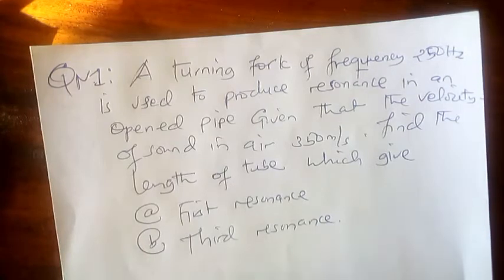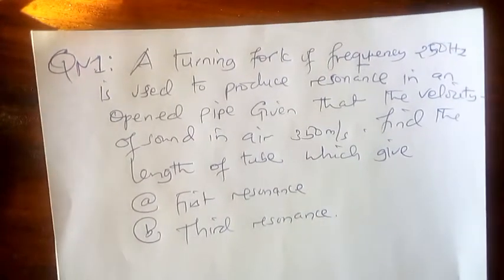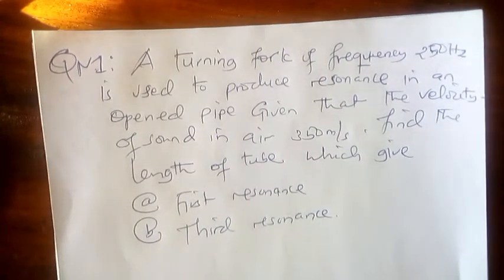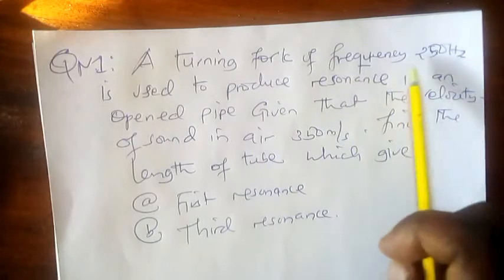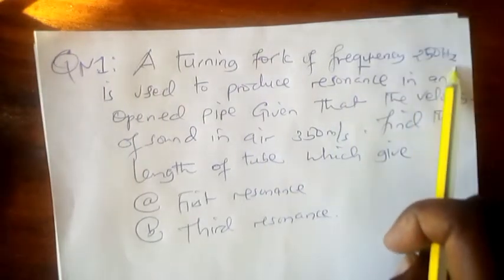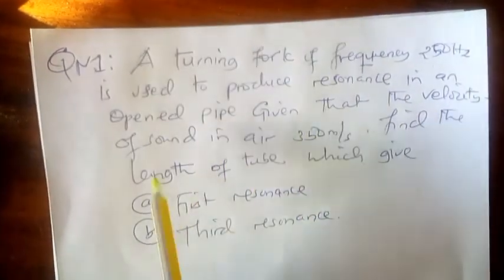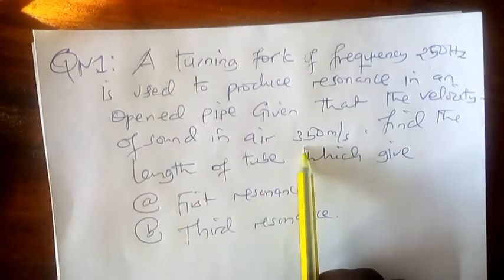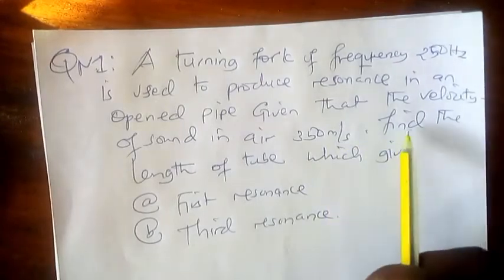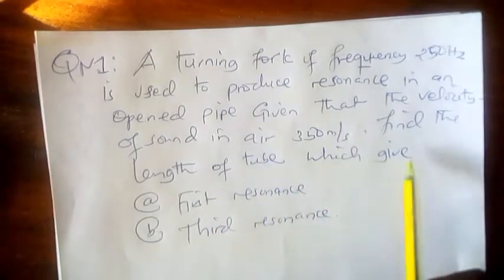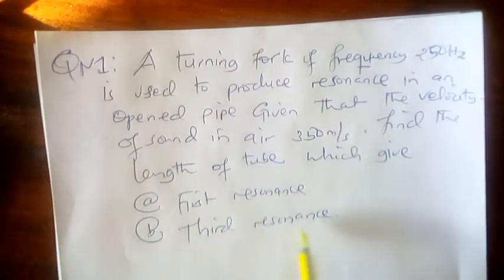Welcome again to another session. The session today is about solving different questions concerning resonance in the open pipe. Let us see question number one. A tuning fork of frequency 250 Hz is used to produce resonance in an open pipe. Given that the velocity of sound in air is 350 m/s, find the length of the tube which gives the first resonance and the third resonance.